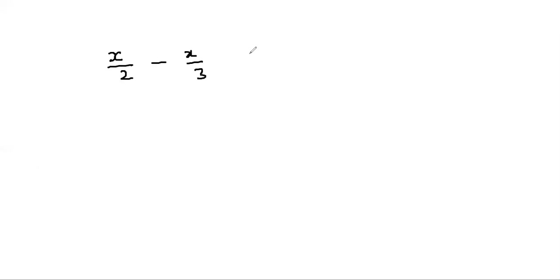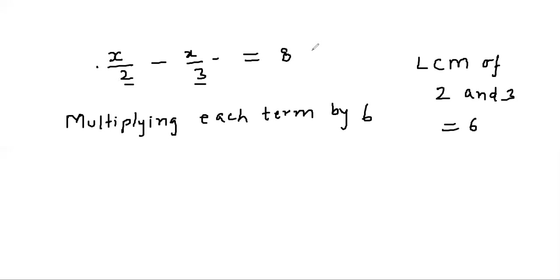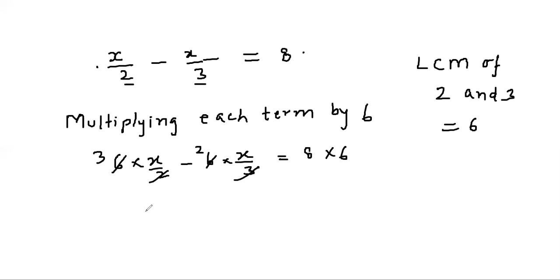Next, we look at questions involving denominators. Suppose x/2 - x/3 = 8. First, we take the LCM of 2 and 3, which is 6. We multiply each term by 6: 6×(x/2) - 6×(x/3) = 8×6, giving 3x - 2x = 48, so x = 48.